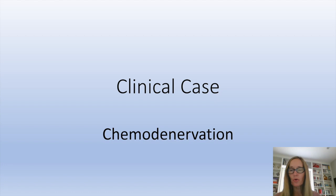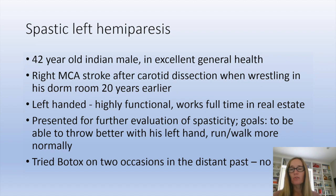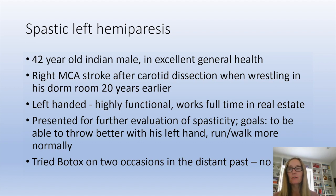This is a clinical case looking at using Botox for chemodenervation. This was a 42-year-old man from Texas who was in excellent general health, but he had a stroke when he was wrestling in his dorm room as a 20-year-old and sustained a spastic left hemiparesis. He was very functional despite this — he works in the family real estate business full time and likes to coach his kids at baseball. He came to see me at the Mayo Clinic to see if there was anything we could do about his spasticity and improve his overall function.